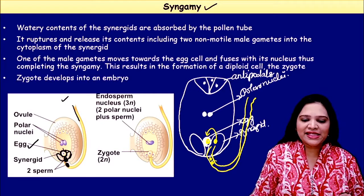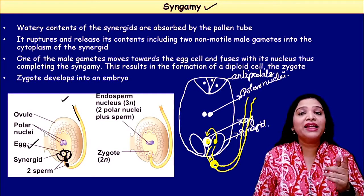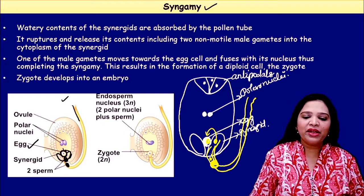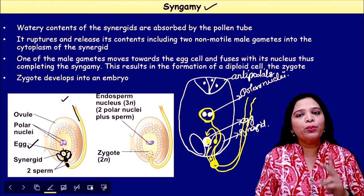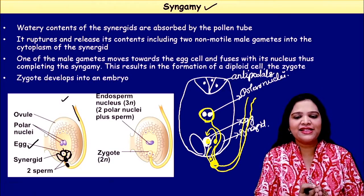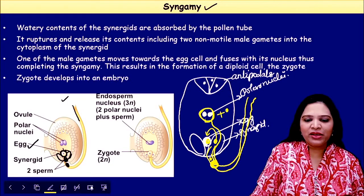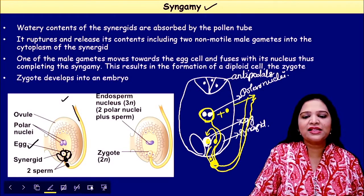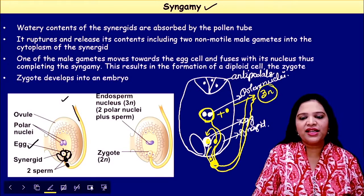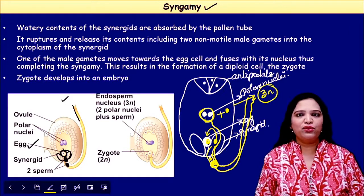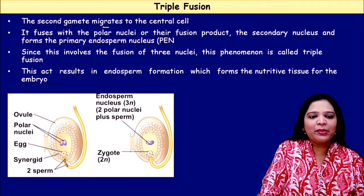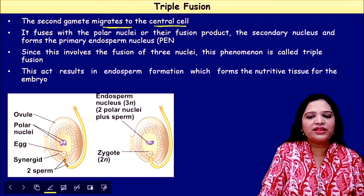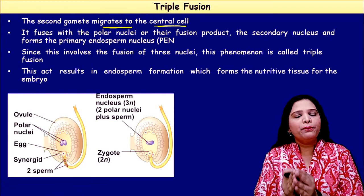What about the second male gamete? The second male gamete further moves and fuses with the two polar nuclei present in the central cell. This results in the formation of 3n — called triple fusion. The second gamete migrates to the central cell and fuses with the two polar nuclei.